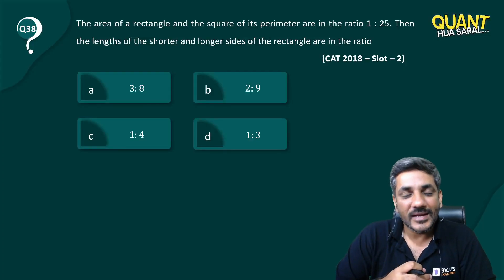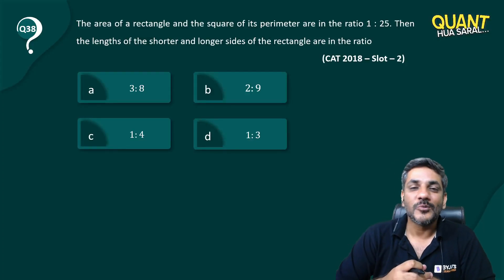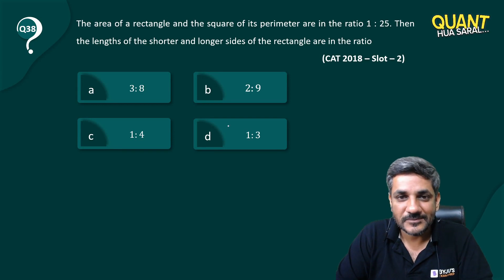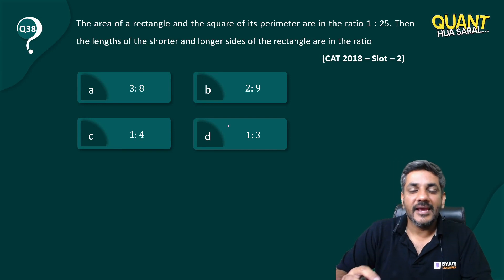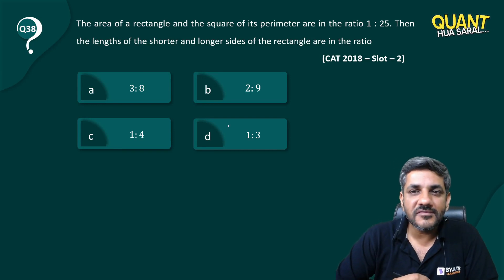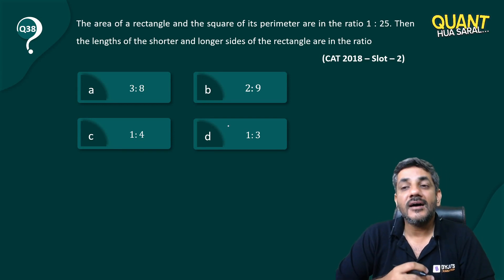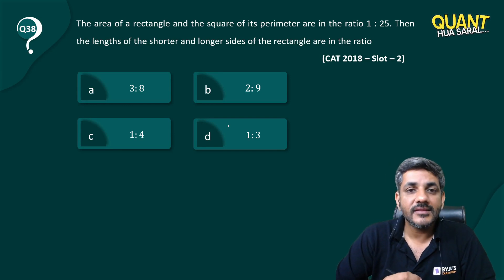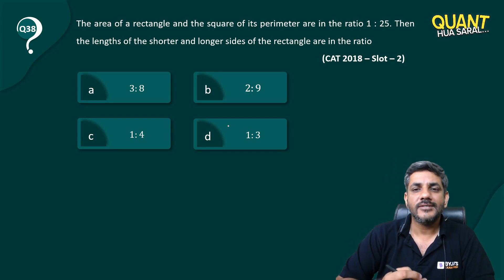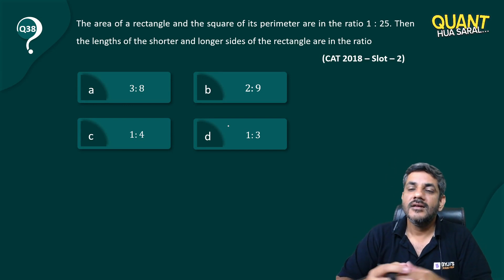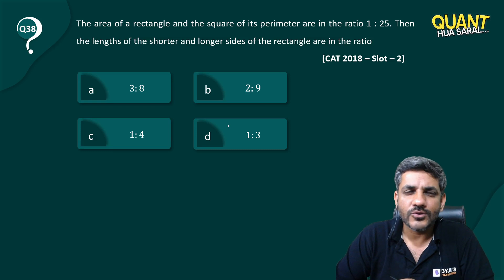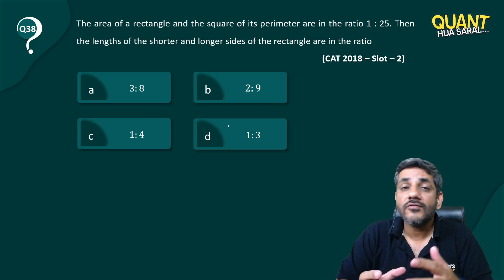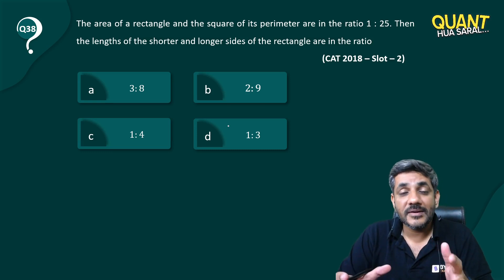Welcome back to question number 38 of this series. The area of a rectangle and the square of its perimeter are in the ratio of 1 is to 25. Then the lengths of the shorter and longer sides of the rectangle are in what ratio?